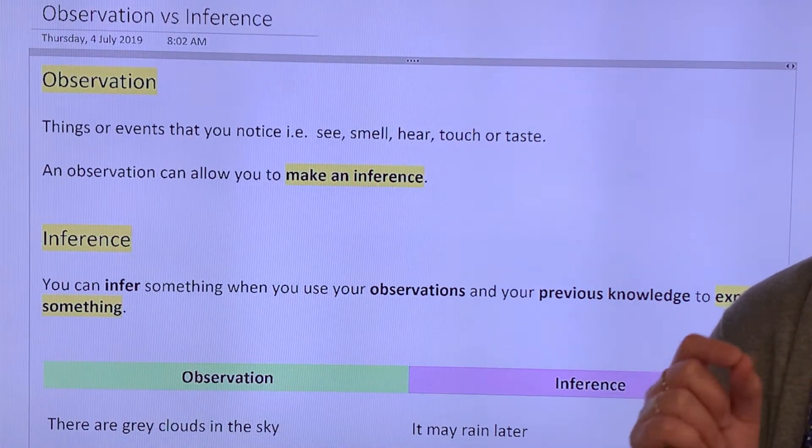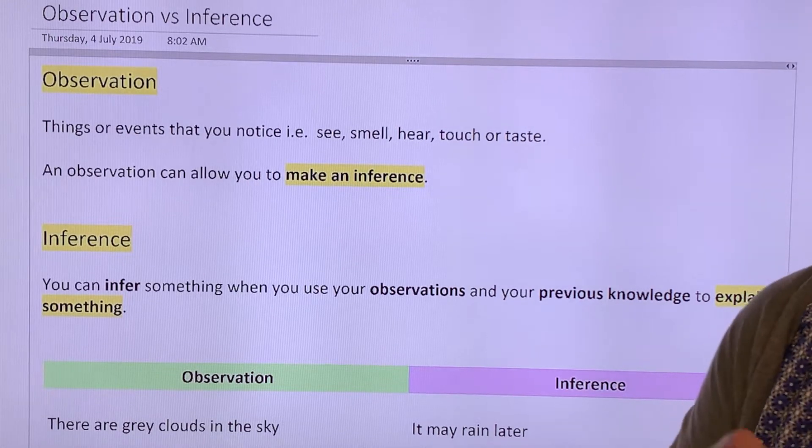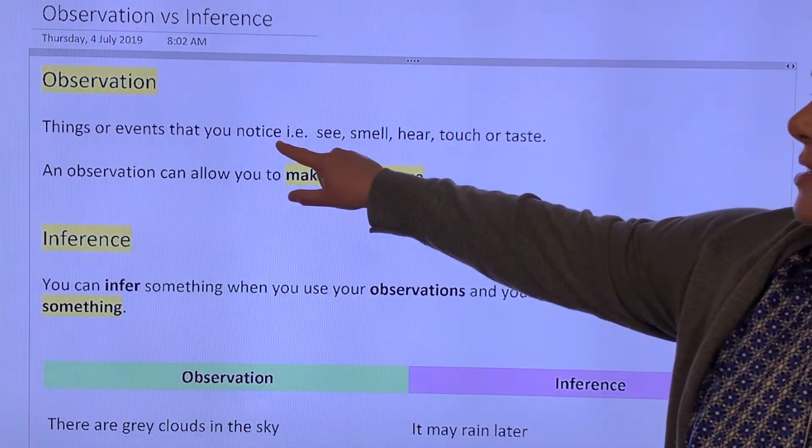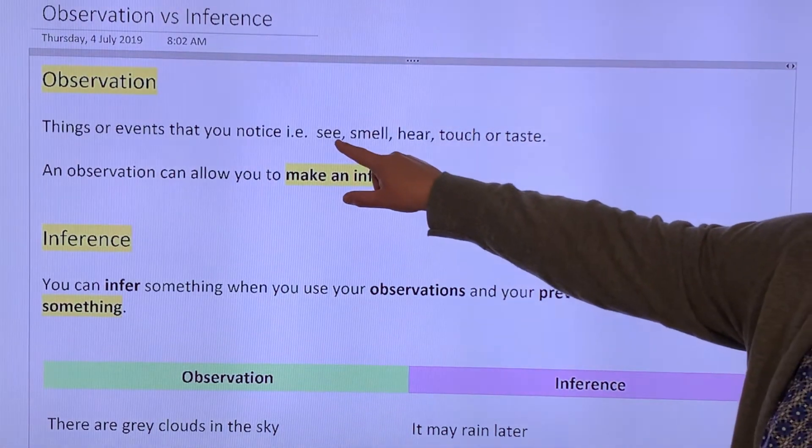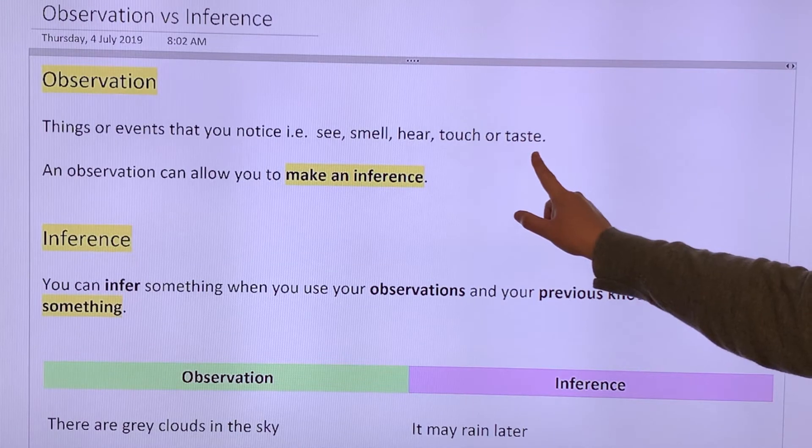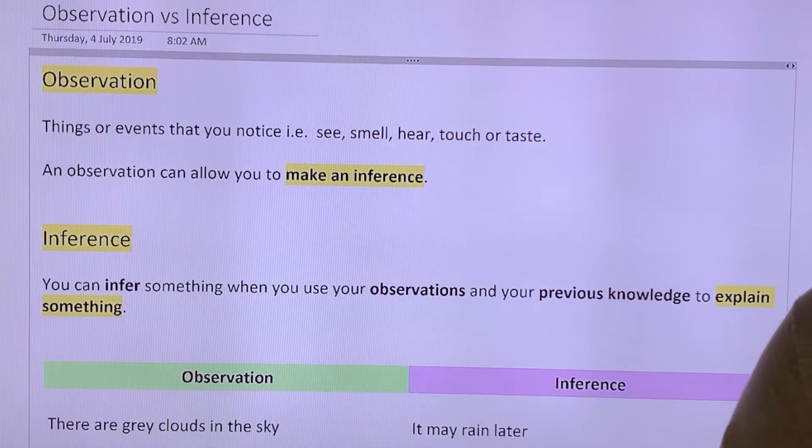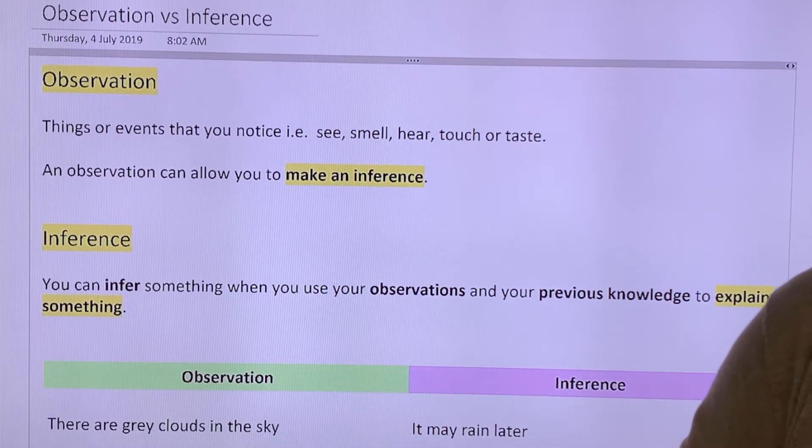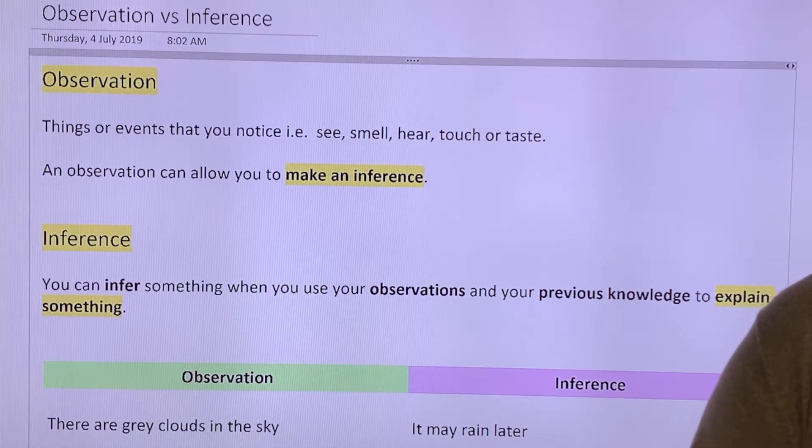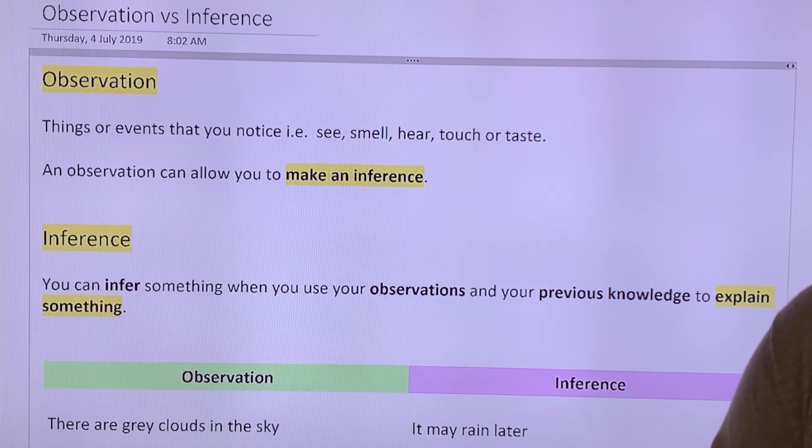So being able to observe. Now, when you observe something, as it says here, it's things or events that you notice, such as see, smell, hear, touch or taste. It's very straightforward. I can see that the lights are on in here. I can count how many people are in here. They are observations. If there was a fire outside, I could observe smoke. I could smell something was burning. That's an observation.